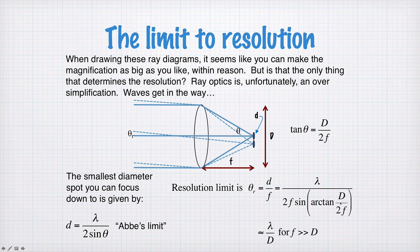So we substitute that into here. So this is theta r. So we get theta r now is equal to d over f, which is equal to lambda over 2f sin theta. And theta is given by arctan capital D over 2f.